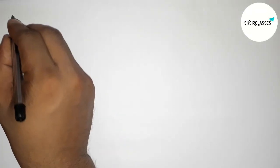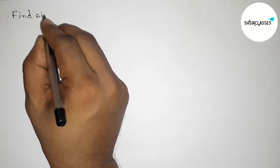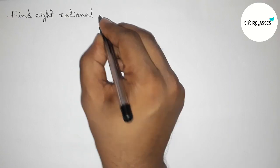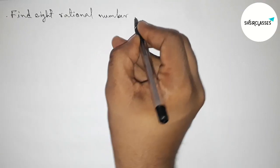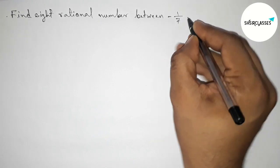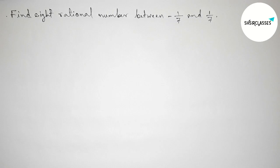Hi everyone, welcome to Sishare Classes. Today in this video we have to find 8 rational numbers between -1/7 and 1/7 in an easy way. So please watch the video till the end. Let's